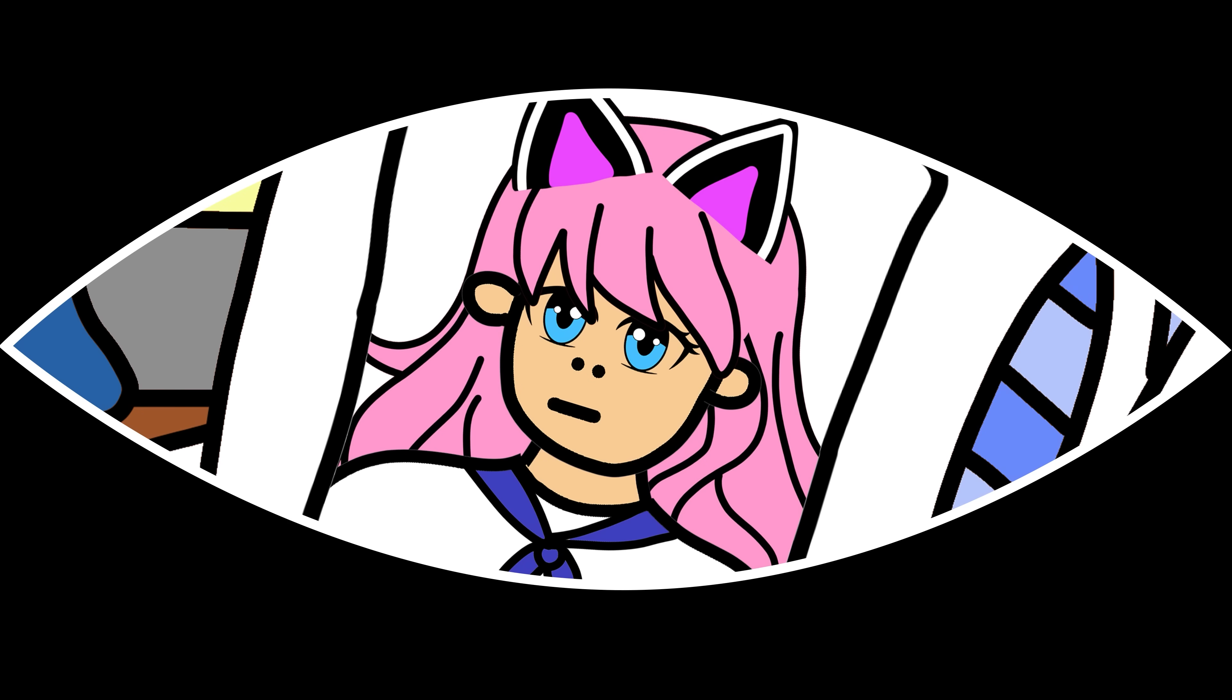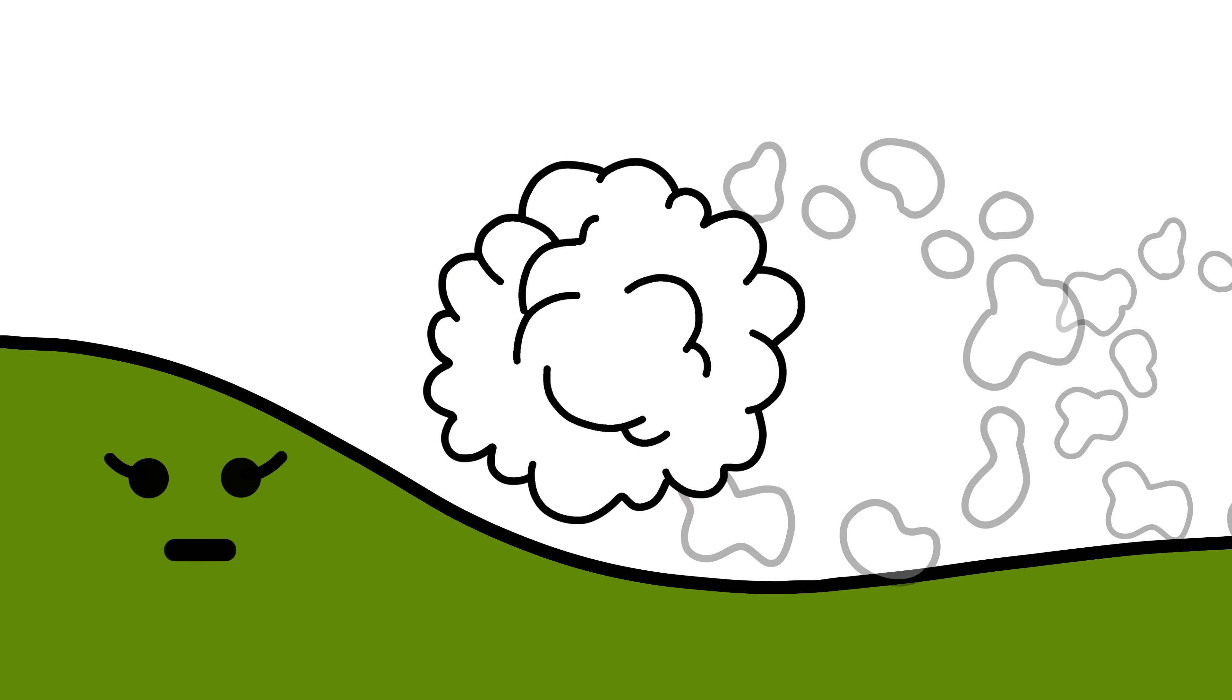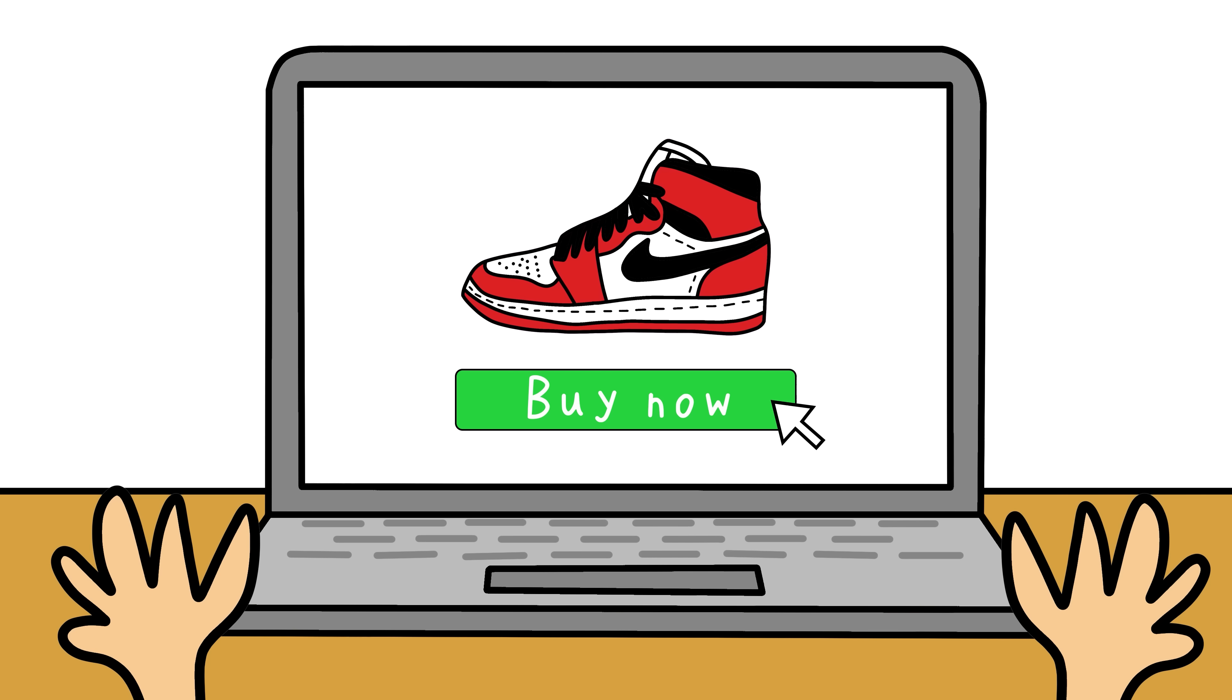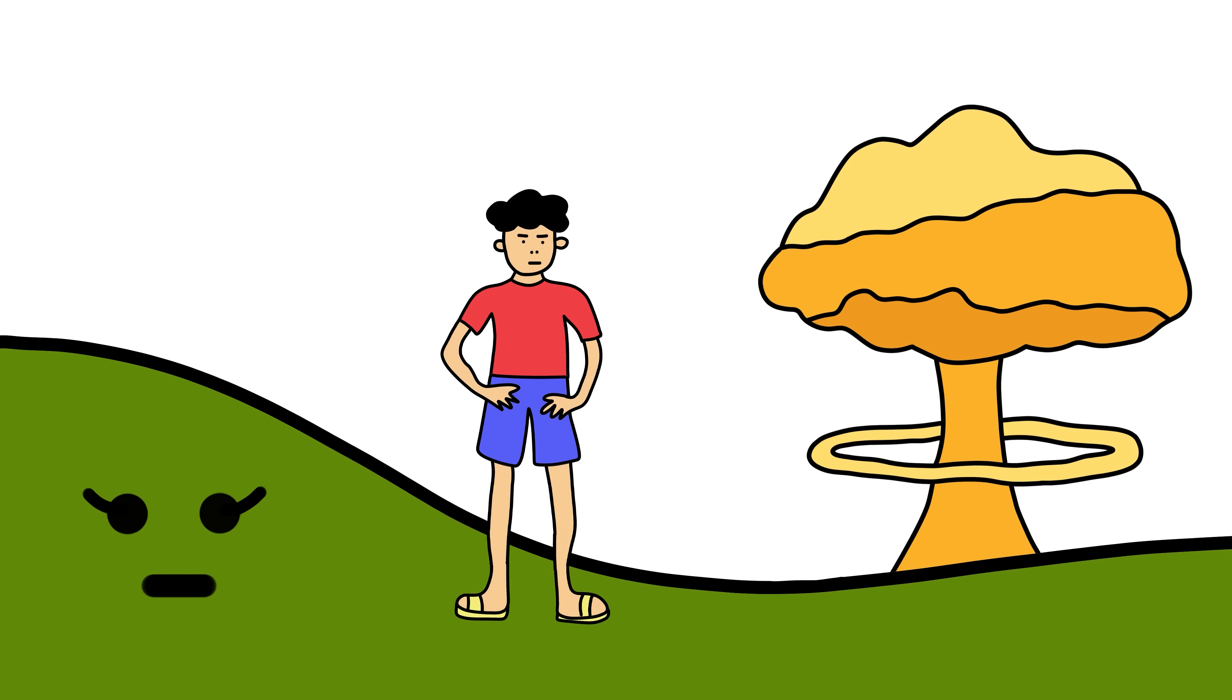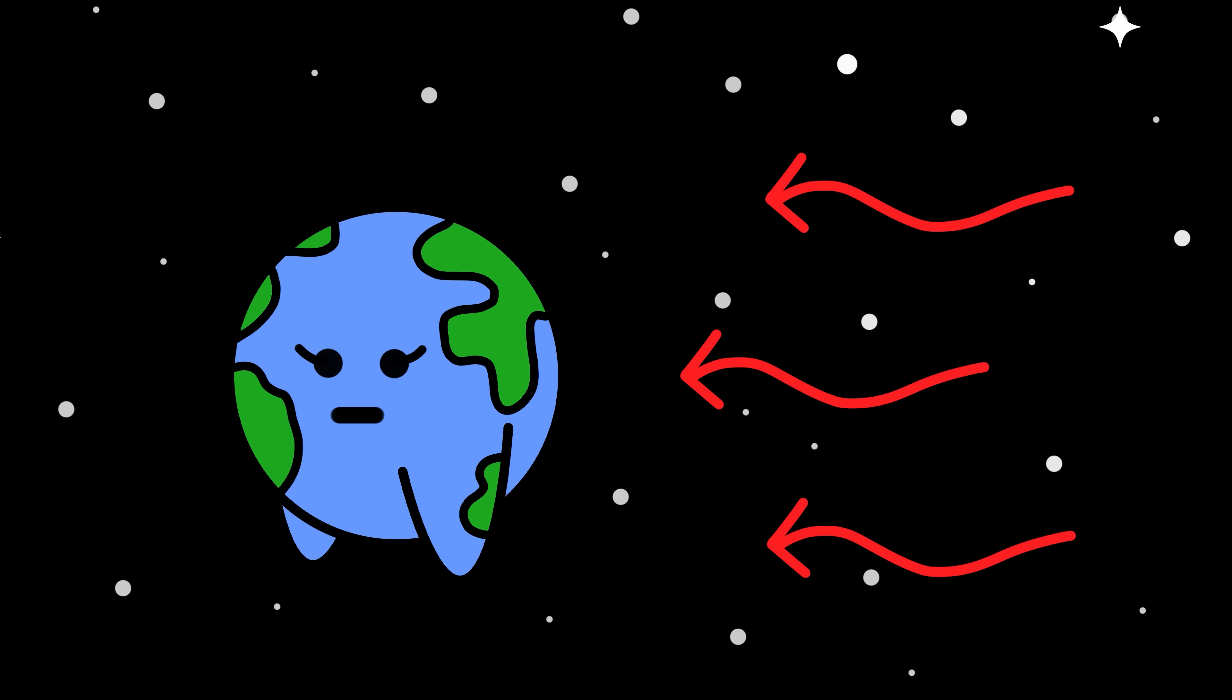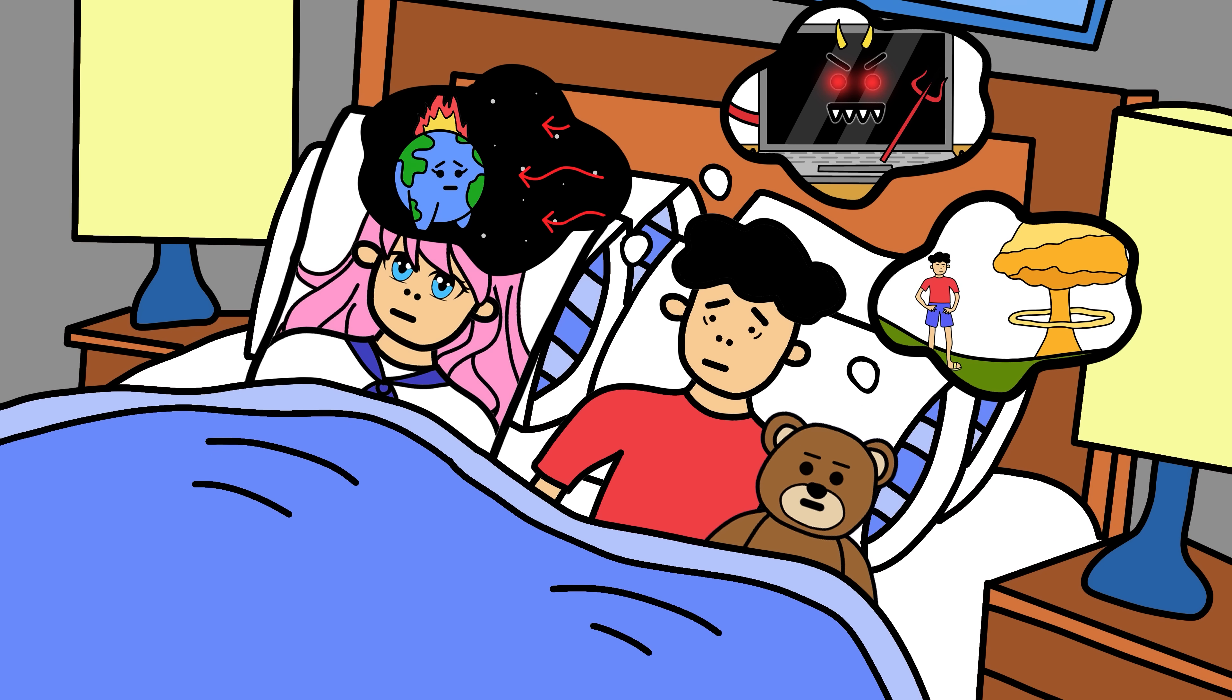You lie in bed with your anime body pillow trying to fall asleep when you're suddenly having an anxiety attack about all the possible ways humanity could go extinct. AI superintelligence could wipe us all out in a few years, one president in a bad mood could cause a nuclear war, and a burst of radiation from deep space could fry the planet in seconds.